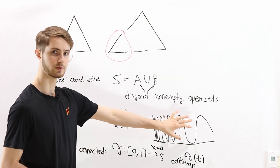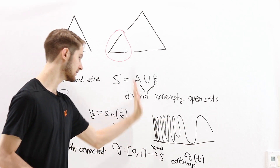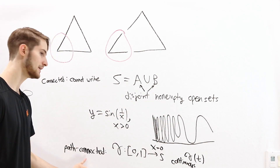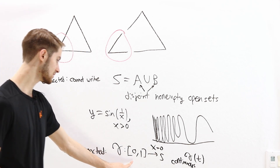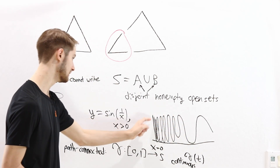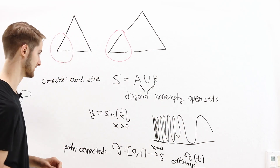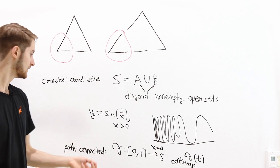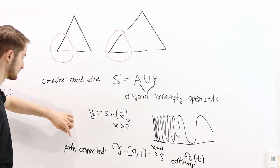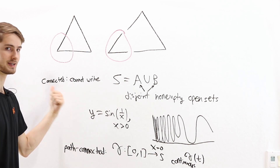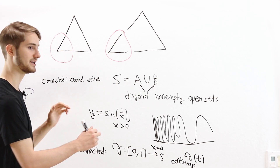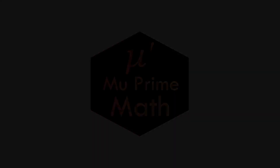The example of the graph of sin(1/x) union the line at x = 0 is connected but not path connected — there's no continuous function from [0,1] to this subset of R2 that starts on the graph and ends on the line x = 0. In general, being path connected is strictly stronger than being connected: any path connected space is also connected, but not vice versa.